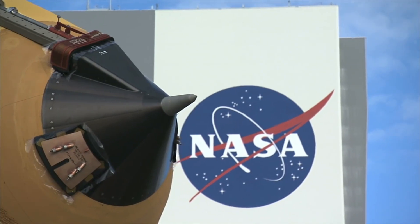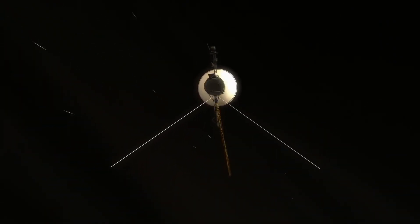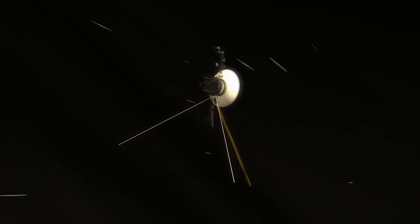Neptune has 14 known moons, each unique and intriguing in its own right. The largest of these moons, Triton, is particularly fascinating due to its unusual orbit.